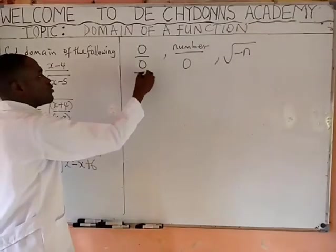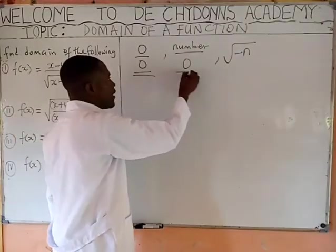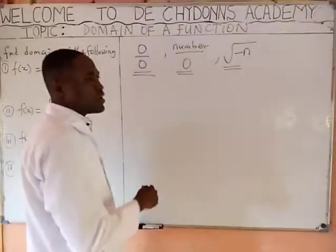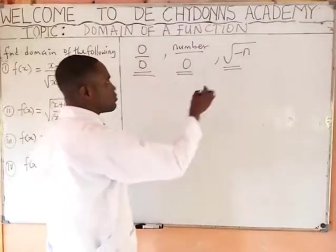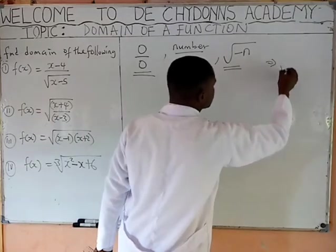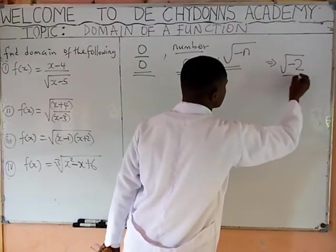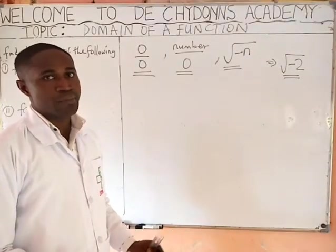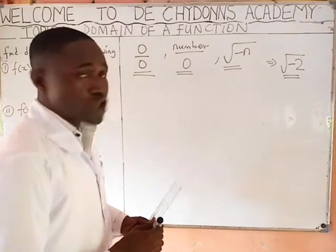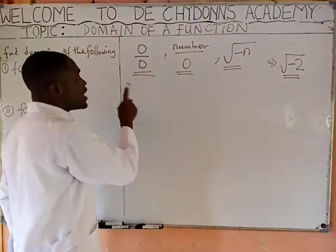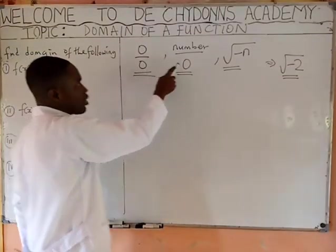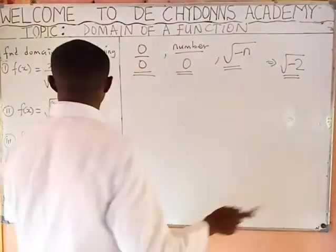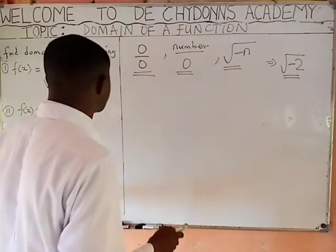When you have 0 over 0, it is undefined. Number over 0 is undefined. Square root of any negative number is undefined — if you click your calculator and enter square root of minus 2, it will tell you syntax error or math error depending on the type of calculator you are using. So whenever a given function gives us any of these, we say that it is undefined.